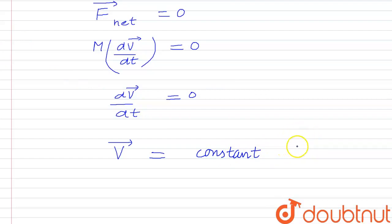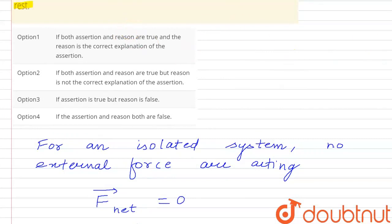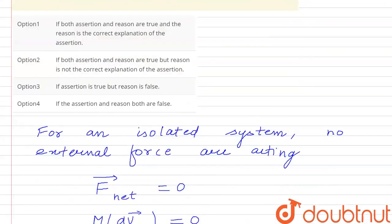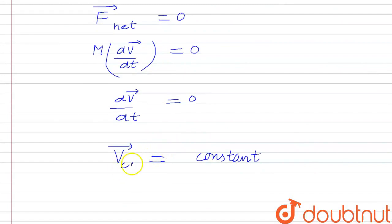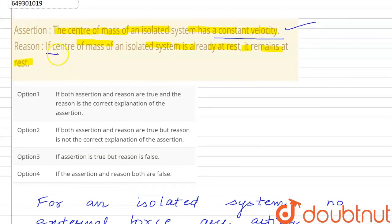If the system is already at rest, it remains at rest. So the assertion statement is clear: the center of mass has constant velocity. If V_CM is zero initially, it remains zero finally. So both assertion and reason are correct.